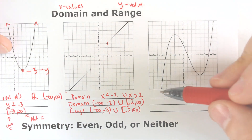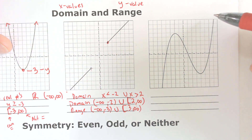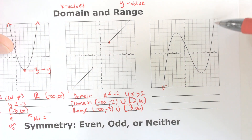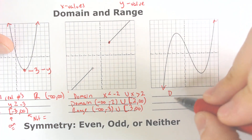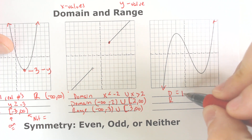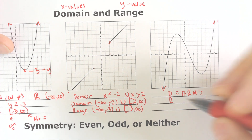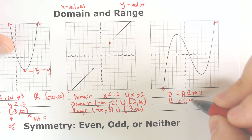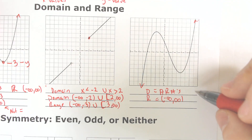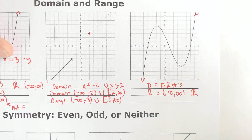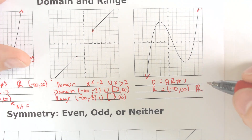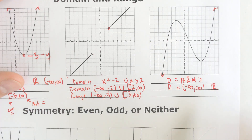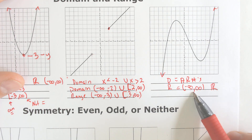Here we've got a crazy-looking graph. It goes up, it goes down, it goes back up. But if you look, it's going to the left forever and to the right forever, and it's going up and down forever. That means that the domain and the range are both all real numbers — you could say negative infinity to positive infinity, or you could use the real set. Whatever method your teacher would like, that would be the one you should probably use.